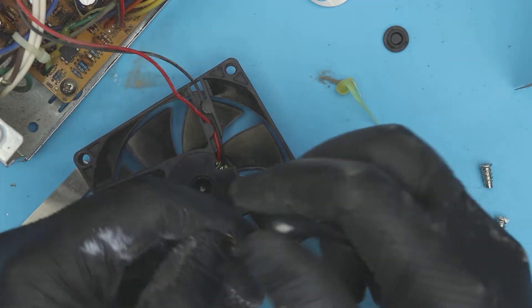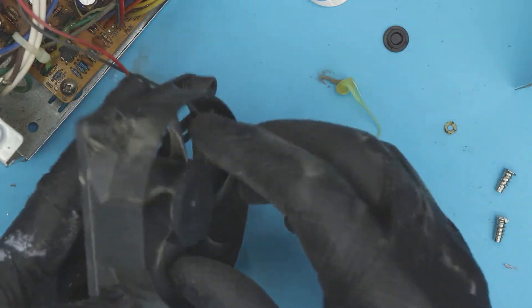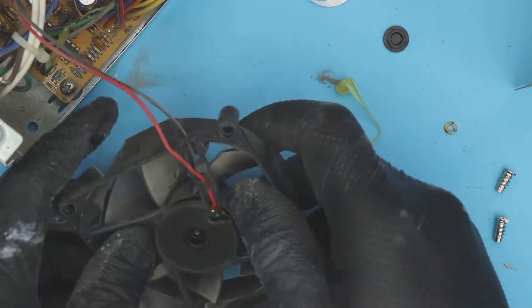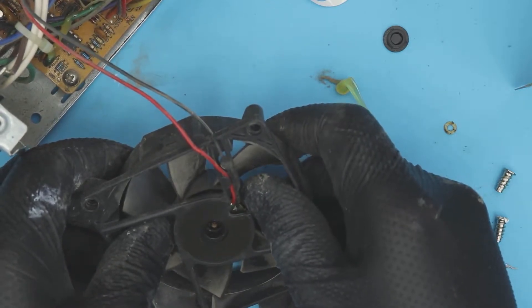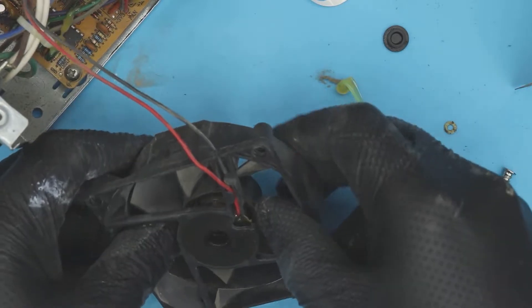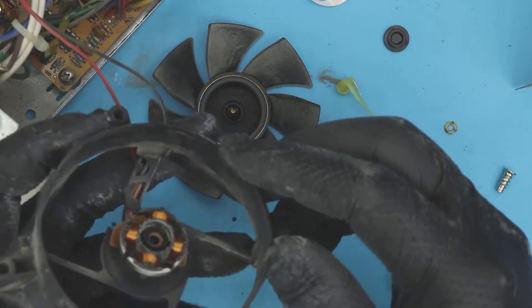This is very important. This prevents the fan from coming out, so keep that. Now you can actually pull the fan out. Just push it from this side. It is kind of stuck, I don't know why. Just slowly push it outward and it will come out.